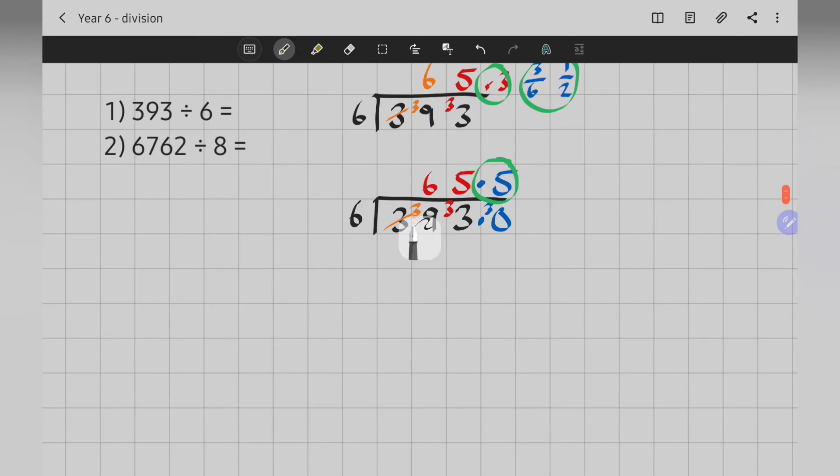Last one then. 6,762 divided by 8. I can't divide 6 by 8, so I'm going to pass it on. 8 times 8 is 64. I use them when I just square numbers. So, I had 3 left over. 8 into 36 goes 4 times, because 4 times 8 is 32. So, I've got 4 left over. 8 into 42. That leaves me with 5 and 2 left over. Remainder 2.